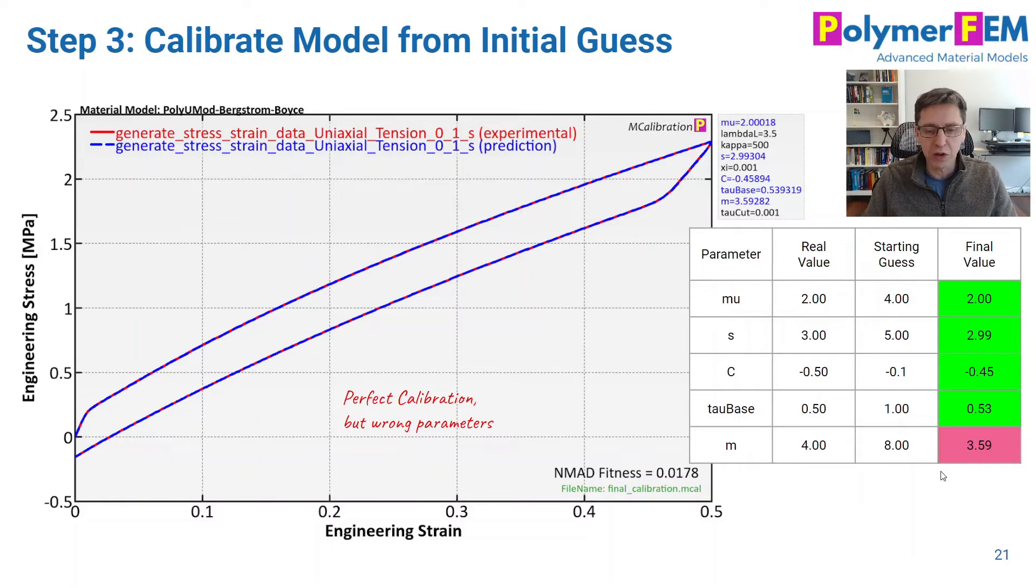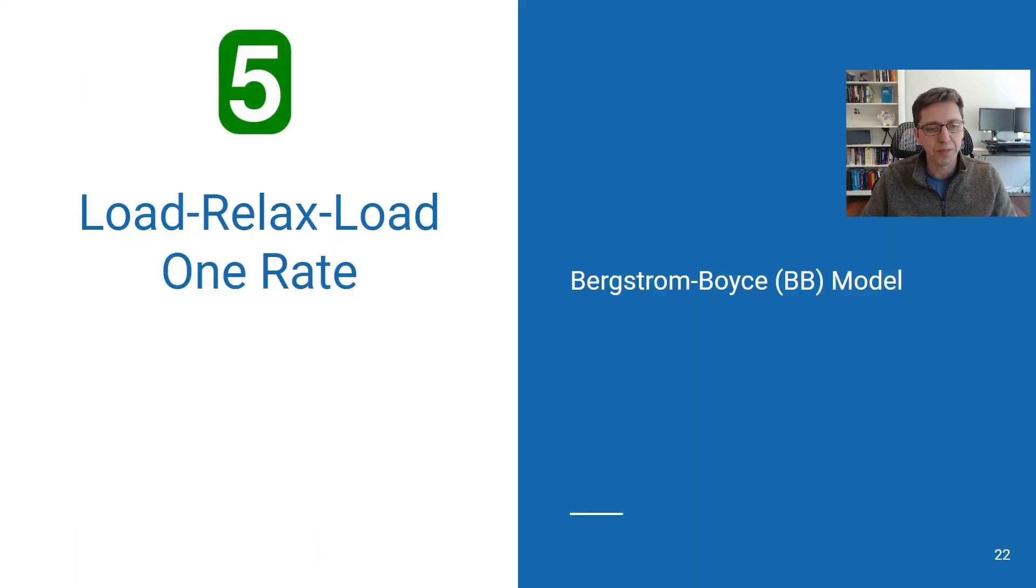But the parameters are again not quite right, particularly the M parameter, which is crucial, critical for the strain rate dependence, is not captured very well. So this wasn't working for us. As one would guess, this is a single strain rate after all, even though it's loading and unloading.